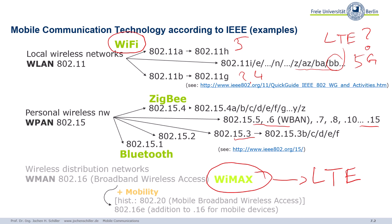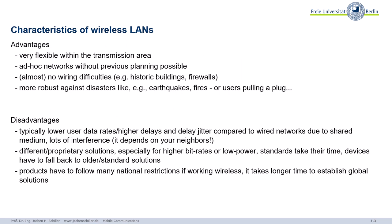Now let's go back to the key characteristics of wireless LANs. The big advantage is flexibility — you can simply install it without asking anyone, without planning. You just switch on the device and it should work, at least within the transmission area. It's very easy to create ad hoc networks, and you don't need a license for the spectrum.